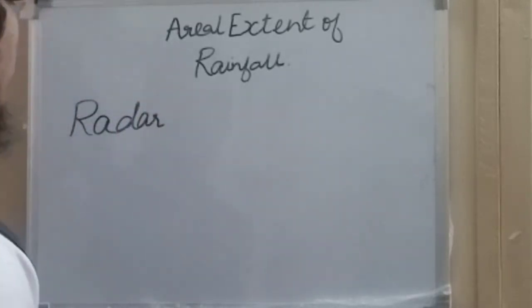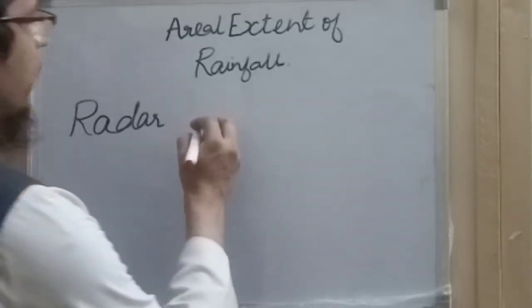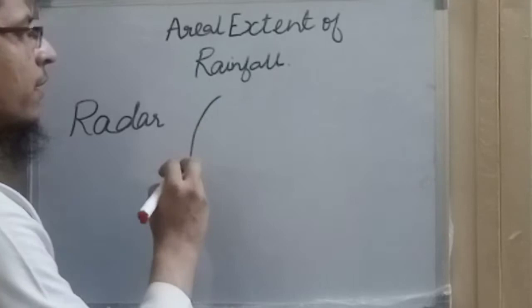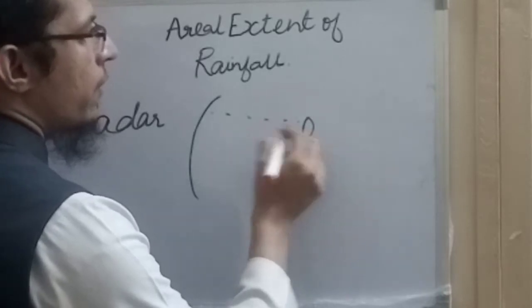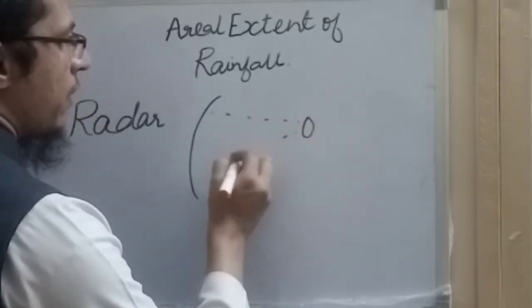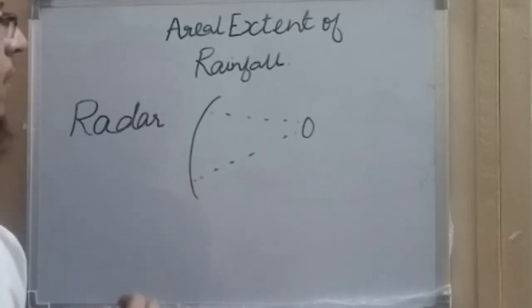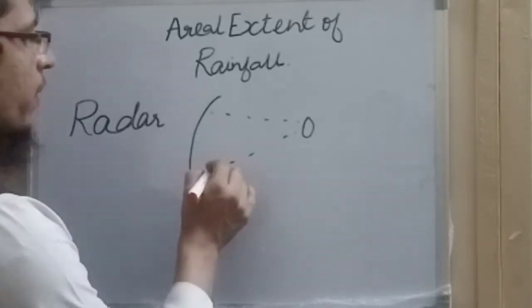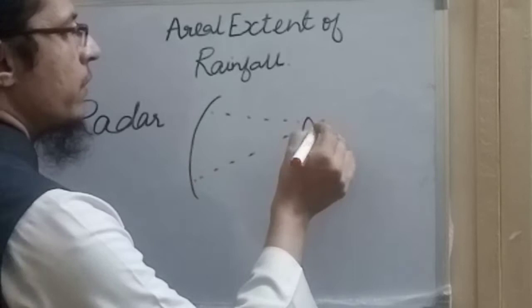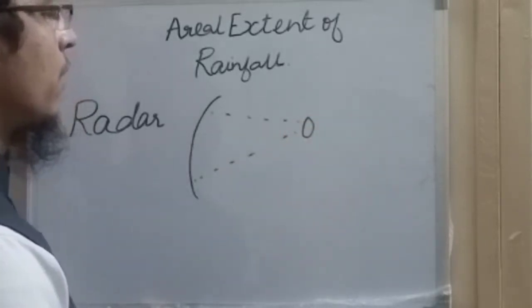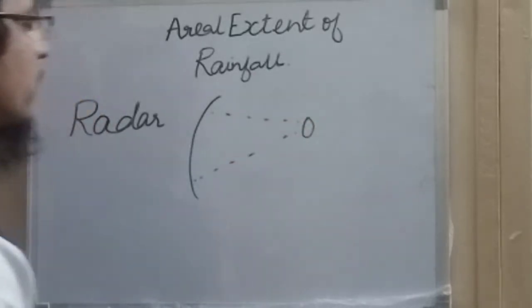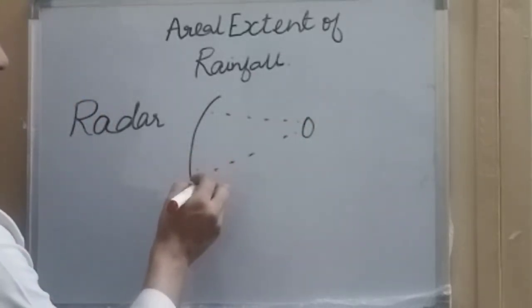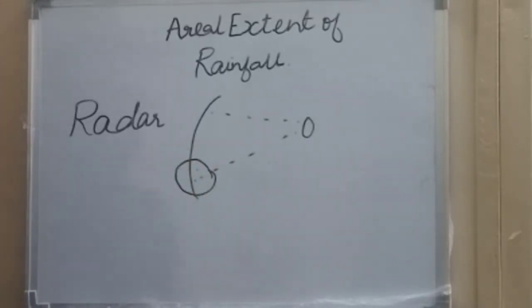The radar continuously emits electromagnetic radiation in the form of successive pulses. There is a transmitter and receiver. The pulse strikes the water droplet, is reflected back, and the echoes are received. The echo power depends upon the intensity of rainfall.